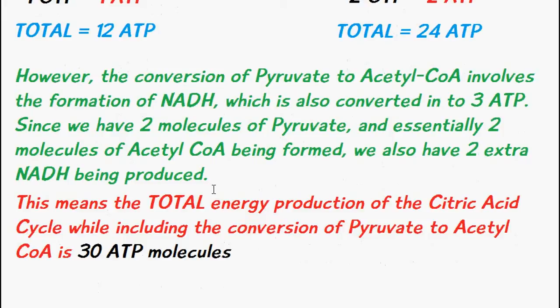So this means if these two NADH's are also used in the electron transport chain then we get approximately about six extra ATPs.